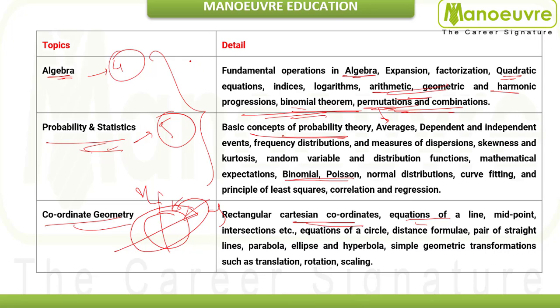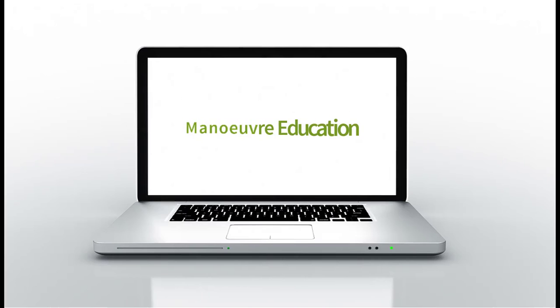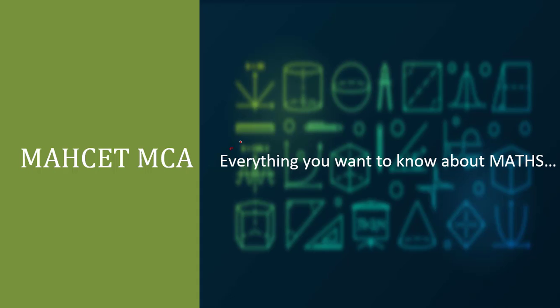If you are able to prepare these first five things, I can guarantee you, you can attempt around 55 to 65% of the paper. Hello students, welcome to Manure Education. In this video, we are going to learn about how you should prepare for Maharashtra MCACET and everything you should know about maths.